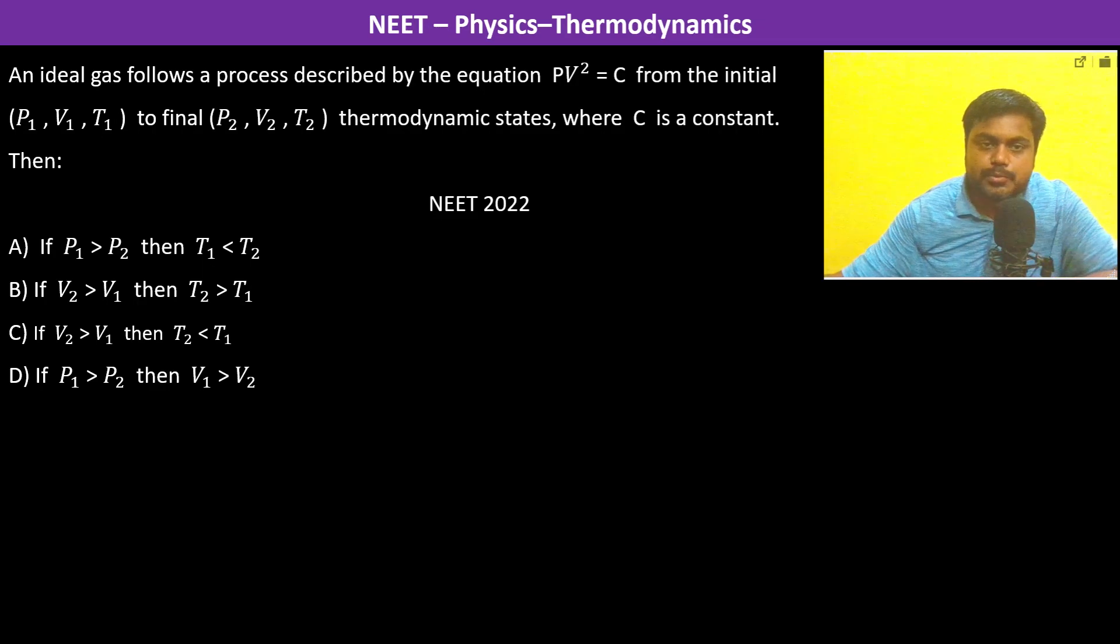An ideal gas follows a process described by PV square is equal to constant. From P1 V1 T1 to final P2 V2 T2, that is how the transition is happening. Now we have to go one by one.